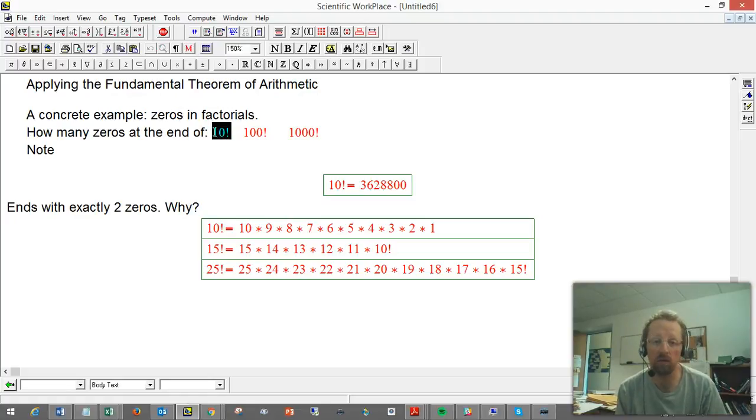We'll do 10 factorial, which will be a nice warm up because we can do it very explicitly, 100 factorial, which we don't want to calculate out explicitly but we can understand a lot about it, and 1000 factorial, which is a really ginormous number.